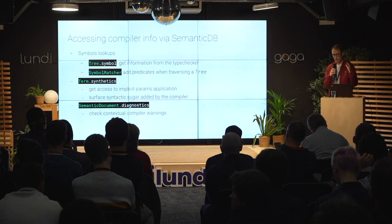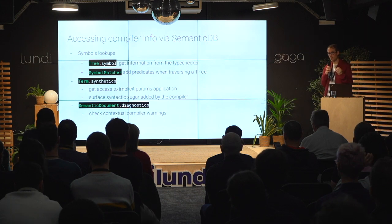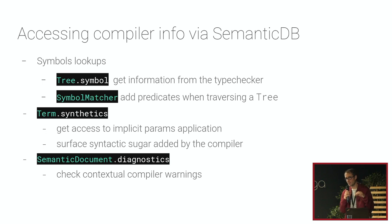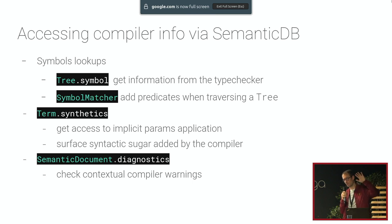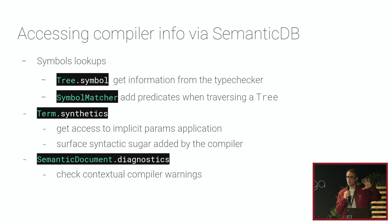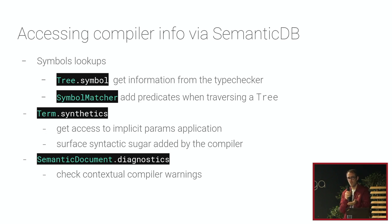Now that we've looked at syntactic information, the added value of ScalaFix is access to semantic information — whatever the compiler gives you. The most popular is symbol lookups: thanks to a `.symbol` method added via implicit on trees, you can get information from the type checker. At compile time, compiler information is captured in the SemanticDB file, which is fed at rule execution time so you know, for example, whether a collection reference is mutable or immutable.